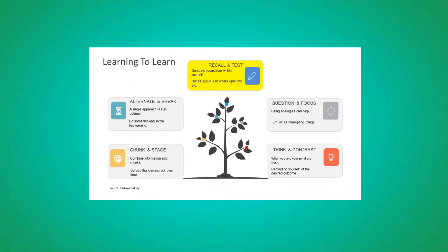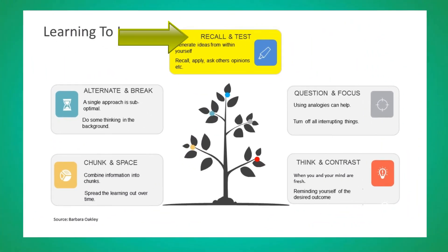Rule number nine for enhancing your learning is called recalling. Try to frequently recall the main ideas of what you are learning, or try generating ideas from within yourself. To do this effectively, always be asking yourself: I wonder what this means?